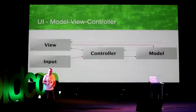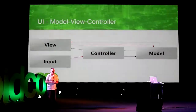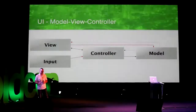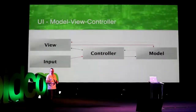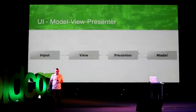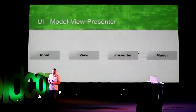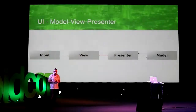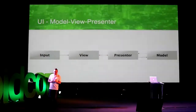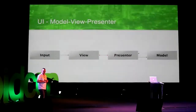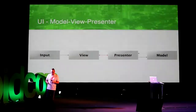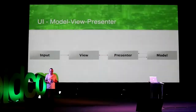With touch phones, we don't use physical buttons anymore, which means the input more logically points to the view. So let's fix this — and then we get Model-View-Presenter, because we can't have the same name for different things. This is probably the most used pattern I've seen. But it still has one issue: the connection between the view and the presenter, where the presenter and the view know about each other.